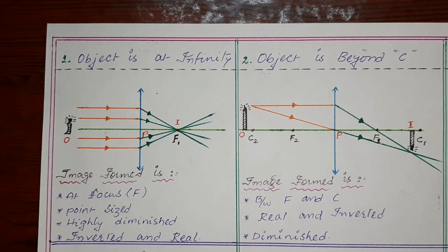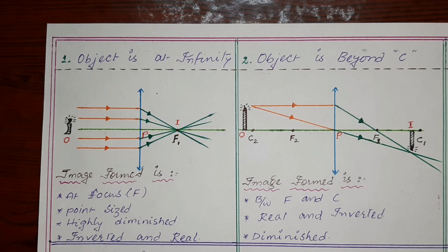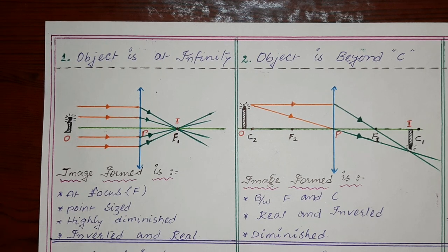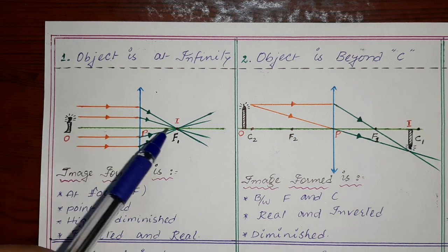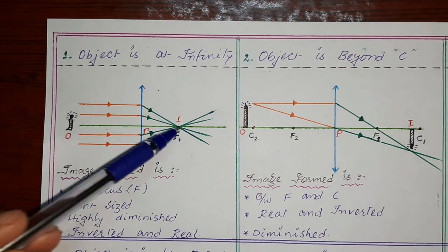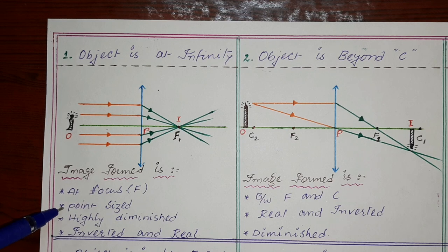If you fix a screen at the focal point, the image is formed on that screen and you can save the image — so that image is called a real image. Every real image is inverted, and because the image is formed at a point, it is point-sized and very small. So we can say it is highly diminished. The image formed is at focus, point-sized, highly diminished, inverted, and real.